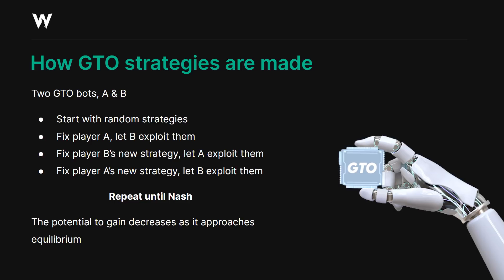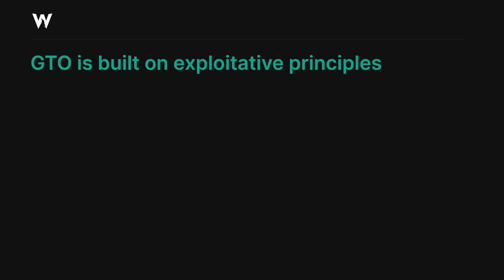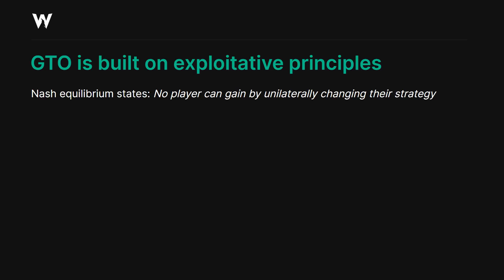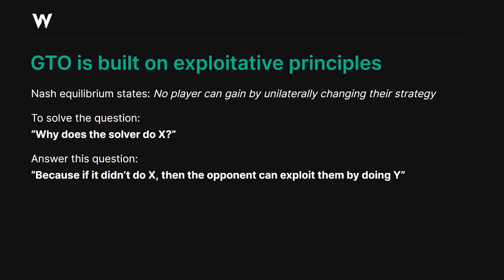GTO is built on exploitative principles. Nash equilibrium states no player can gain by unilaterally changing their strategy. In other words, when everyone's playing GTO, you cannot gain by deviating from GTO. So in order to solve the question 'why does the solver do X?', you have to answer: because if it didn't do the thing, the opponent can exploit them by doing Y. Why does the solver do X? Because if it didn't, the opponent can exploit by doing Y. This is fundamental to all solver studies.